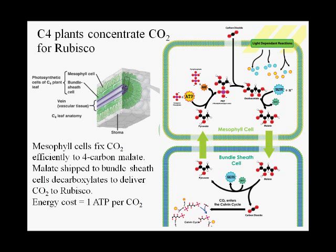C4 plants have a slightly different leaf anatomy. Their photosynthetic cells are differentiated into two different kinds of cells. One type is called the mesophyll cell, and it's pretty much scattered throughout the leaf. A second type is called the bundle sheath cell, and these bundle sheath cells are grouped very tightly around the vascular tissues — the leaf veins, which conduct water to the leaf and sap out of the leaf down to the roots.